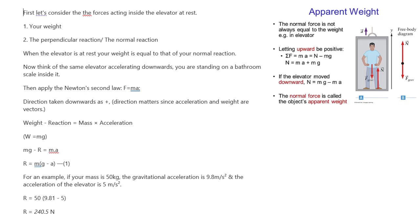Weight, reaction equals mass times acceleration. W equals mg mg, r equals mar equals mg, a, dash 1 for an example, if your mass is 50 kilograms, the gravitational acceleration is 9.8 meters slash s squared and the acceleration of the elevator is 5 meters slash s squared. R equals 50, 9.81 to 5 r equals 240.5 n.